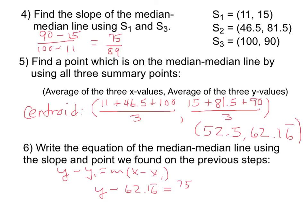And in this particular case, the equation is going to be y minus 62.16 repeating equals the slope, which was 75 over 89, parentheses x minus the x-coordinate, which was 52.5.